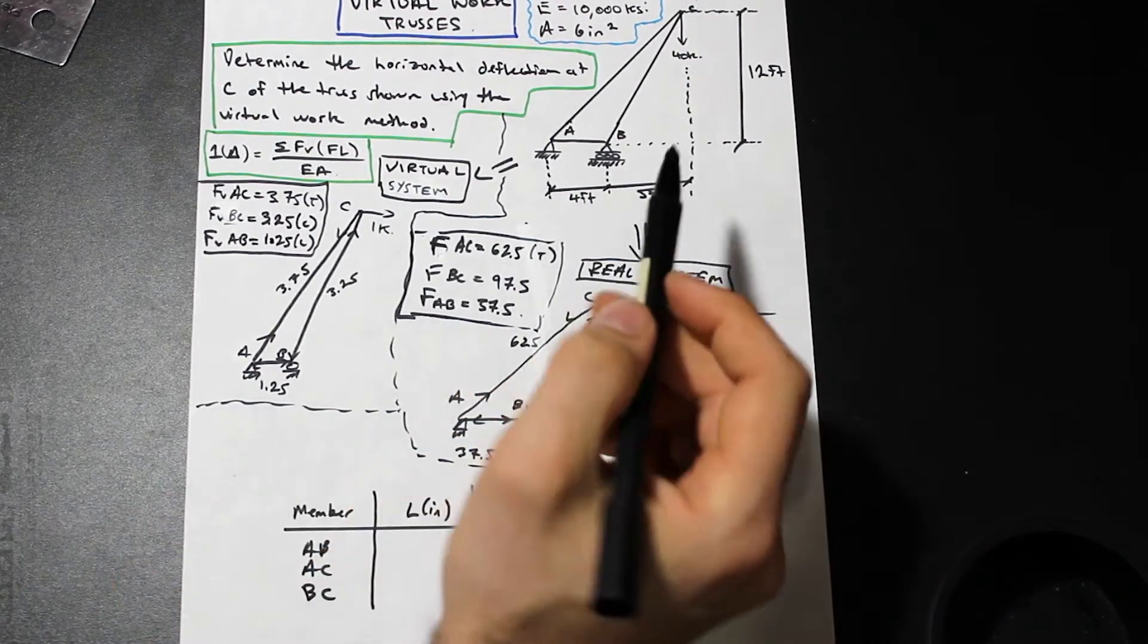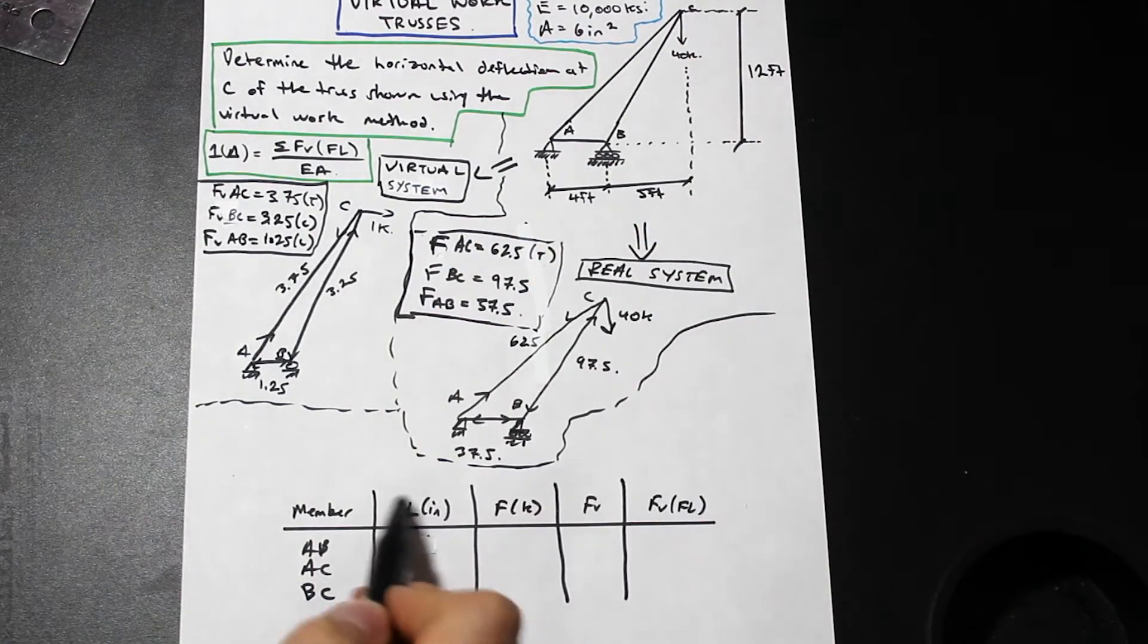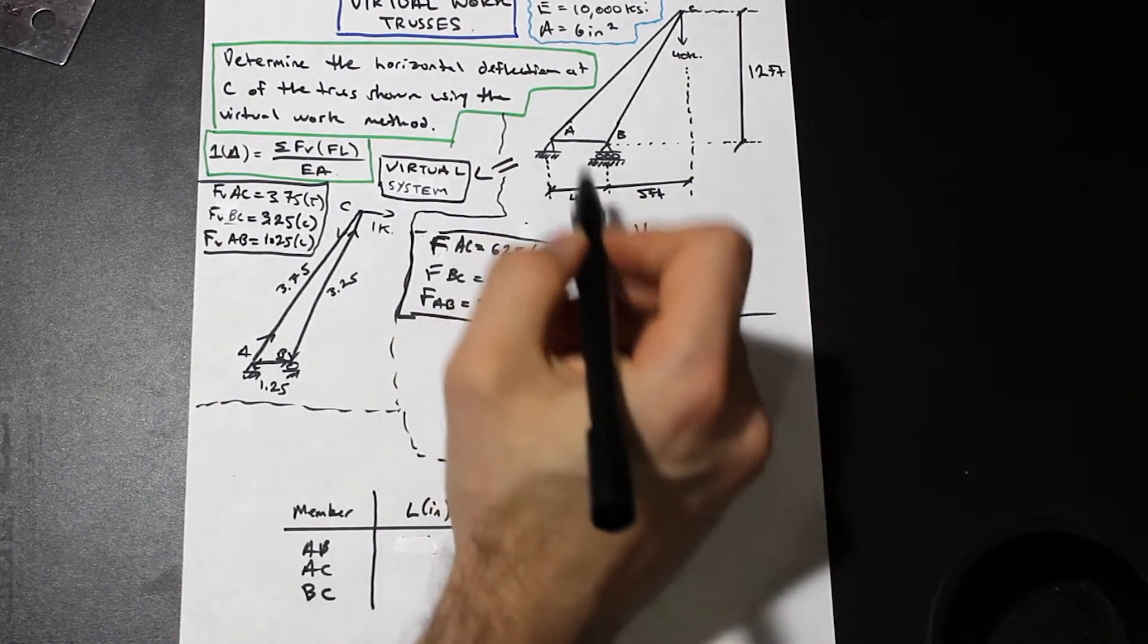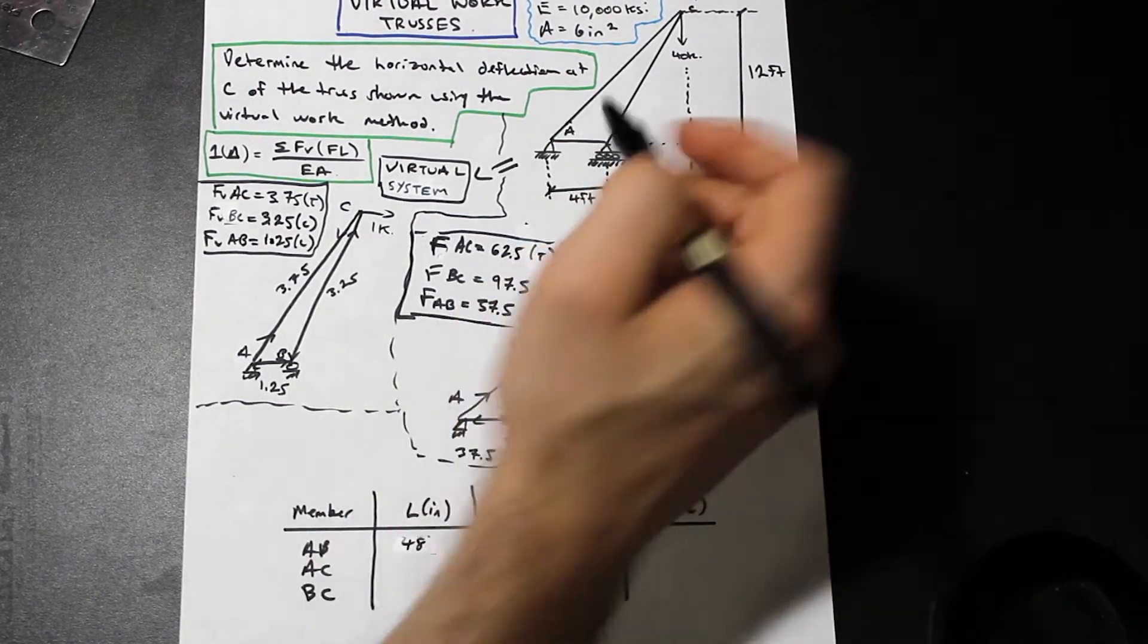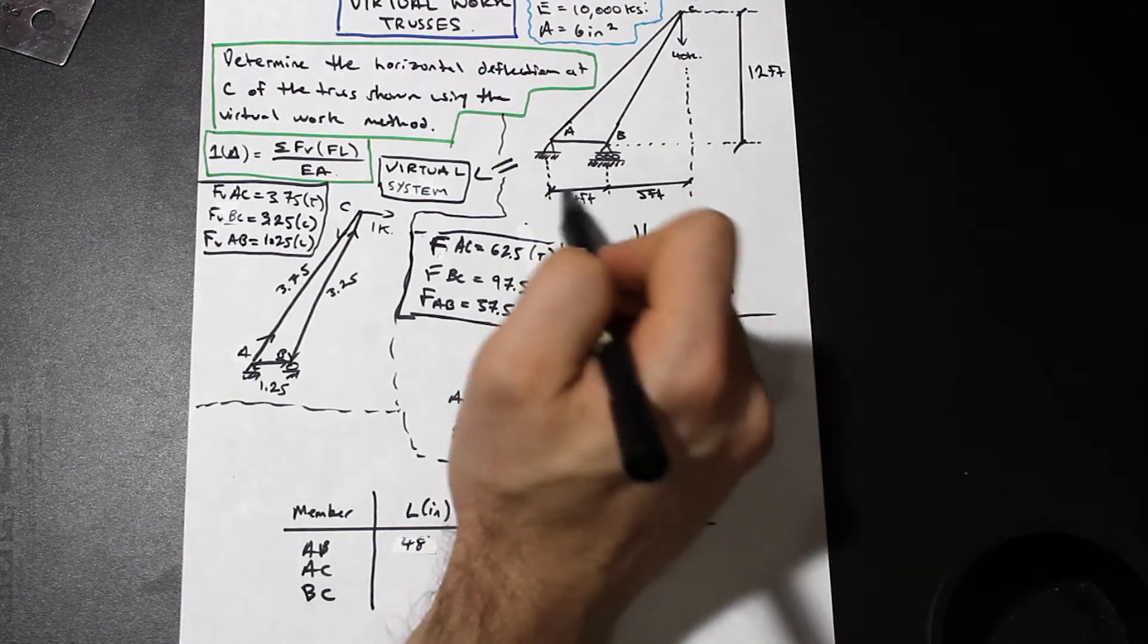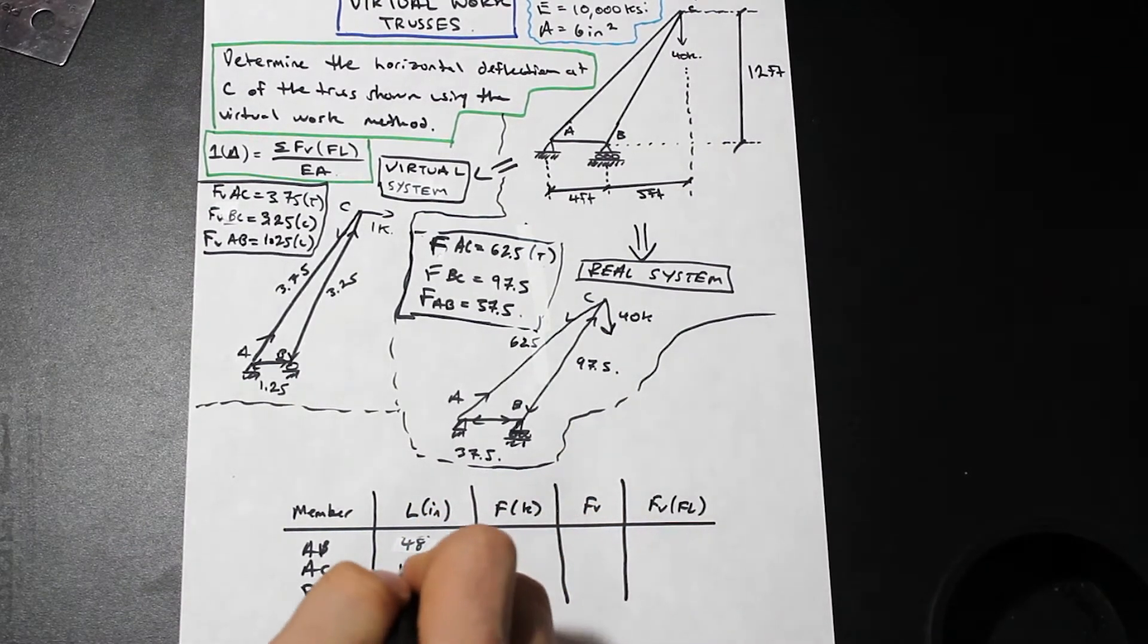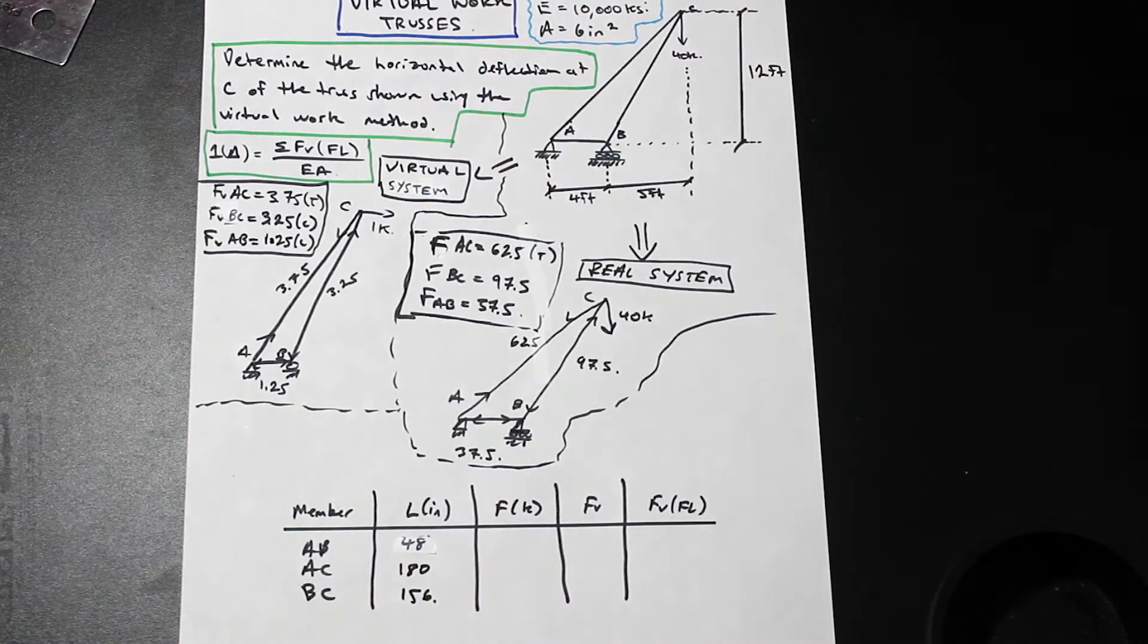Our L is just the length of all the members. For AB we're given L, it's four feet and we're going to do everything in inches and kips so we can go with the units of E. L is four feet, four times twelve is 48 inches. For AC, you're going to have to calculate these lengths here, but you're given the length of the triangle, the base, and you're given the height, so that's no problem. Go ahead and try that on your own. AC is going to be 180, BC is 156 inches.